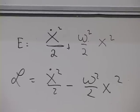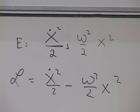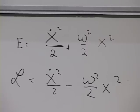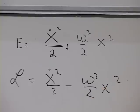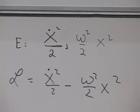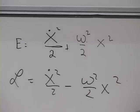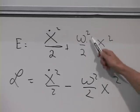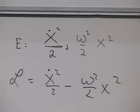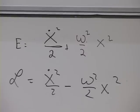The quantum oscillator has energy levels quantized in units of omega. So the energy levels of this harmonic oscillator are any integer times omega times h-bar.